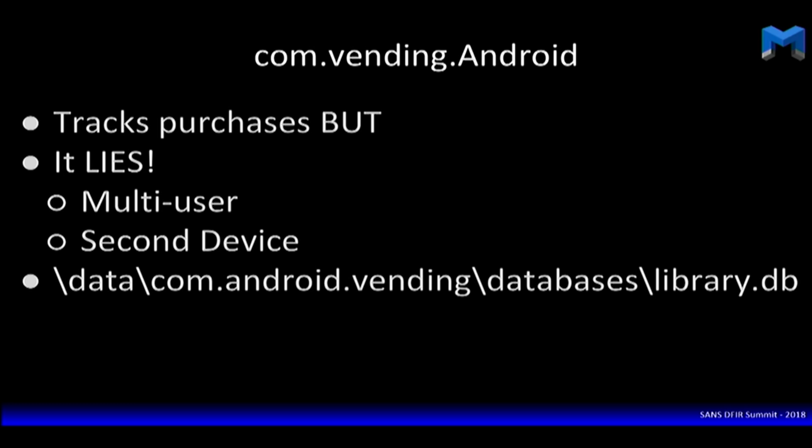This database lies. Looking at Twitter here as an example — there are two instances where this database is going to lie. Number one, if you have more than one user account on the Android device, it will take applications from one user and add them to the other user's application database. It actually records a user's name and the application, duplicating across both, even if the second user never installed or purchased the application, even with two unique Gmail accounts.